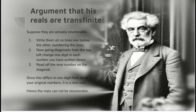Here he is presenting his diagonal argument. Start out by assuming that the reals are enumerable. Write them all down on lines, one below the other, numbering the lines. So that's fair enough if they're enumerable. Now, going diagonally from the top left corner, change one digit on each line. You can do it by any means you want, so long as you change it. Read off the new number on the diagonal, and because it differs by one digit from every other number, it must be a new number. Hence, the reals must be non-enumerable. They must be trans-finite.